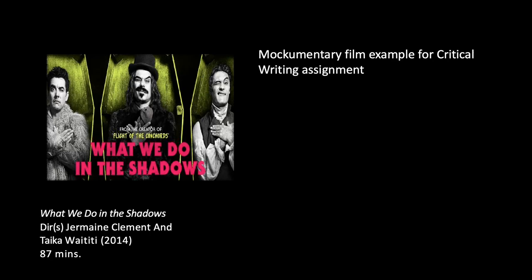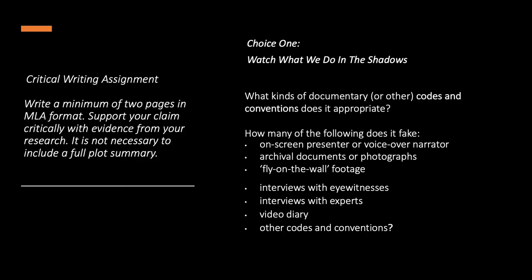The mockumentary assigned for the critical writing assignment this week is What We Do in the Shadows. Be sure to watch the feature-length version and not the television show. You'll find the critical writing assignments in detail in the syllabus. The expectations are that you write a minimum of two pages — roughly 500 words — in MLA format, supporting your claim critically with evidence from your research. It's not necessary to give a full plot summary in a critical essay.